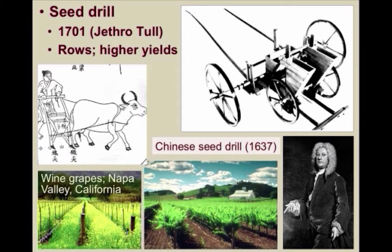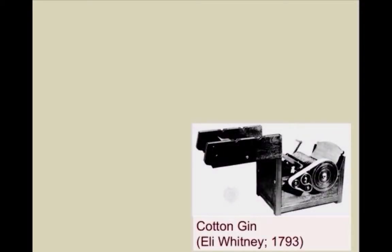Europe wasn't the only region to massively further the production of food. The United States, with its relatively cheap and vast farmlands and free society, provided the right environment for innovation. One example was the cotton gin, invented by Eli Whitney around 1793. This machine quickly and easily separates the cotton fibers from the seeds — a job previously done by hand. These seeds are used again to grow more cotton, and this simple machine, massively duplicated, led to an immense increase in cotton production.